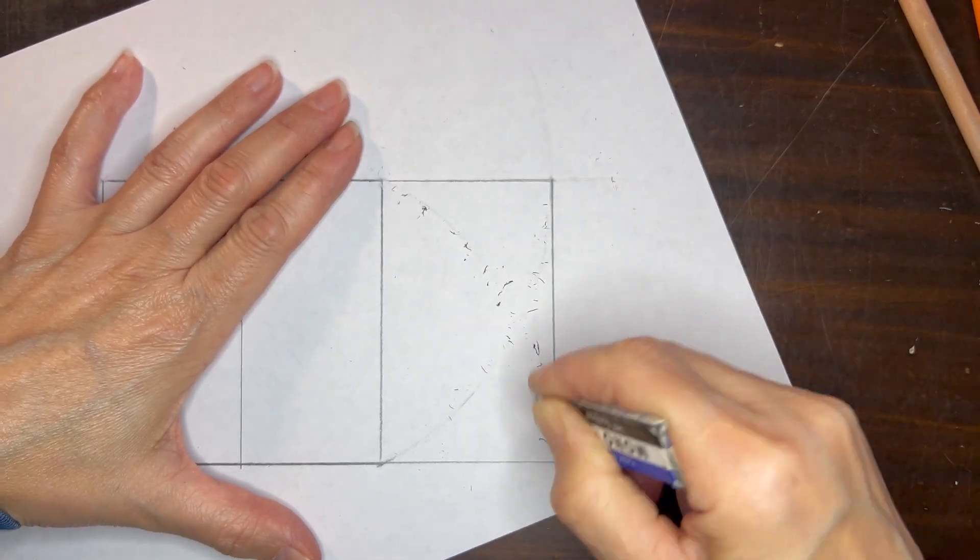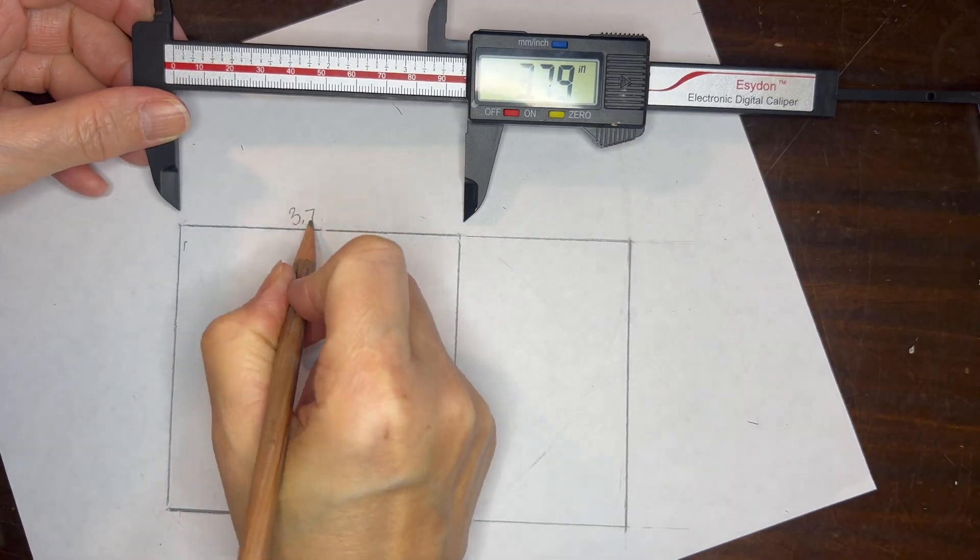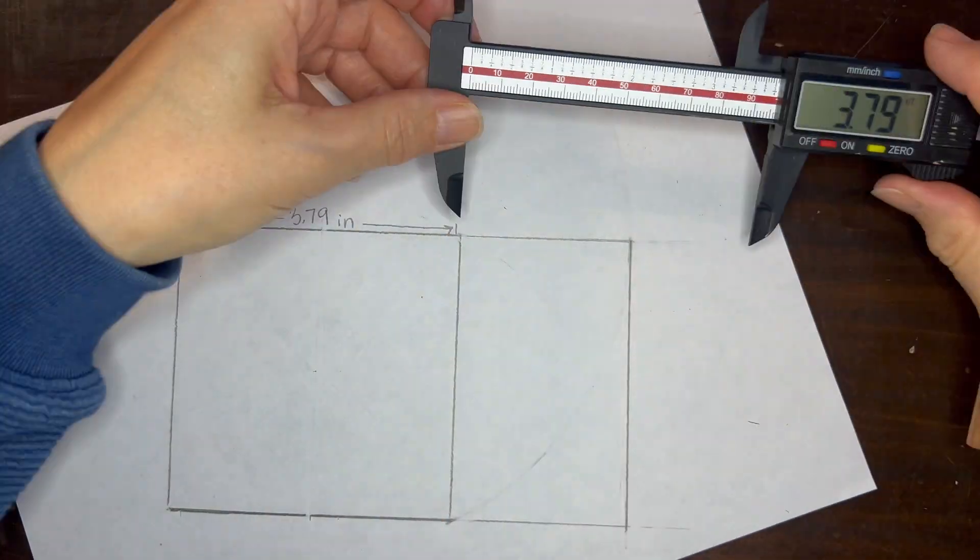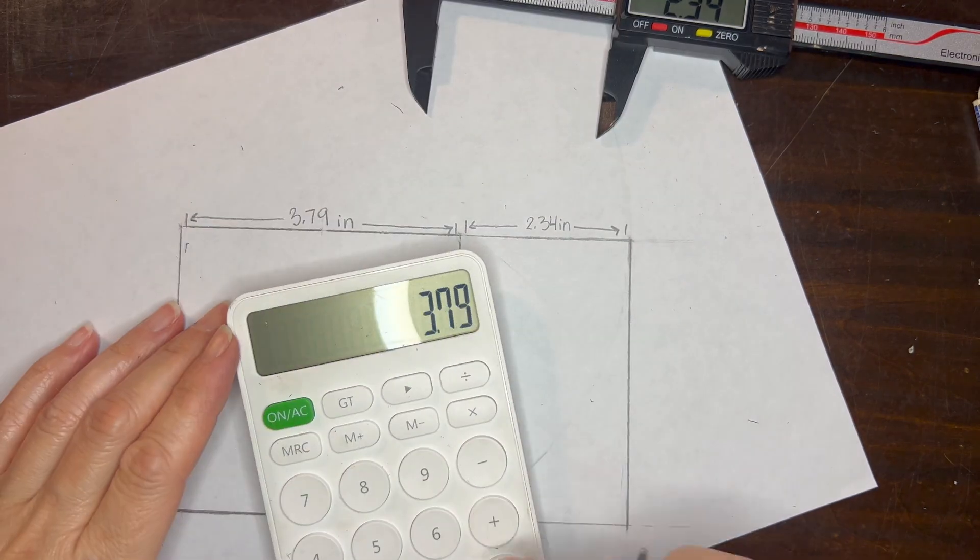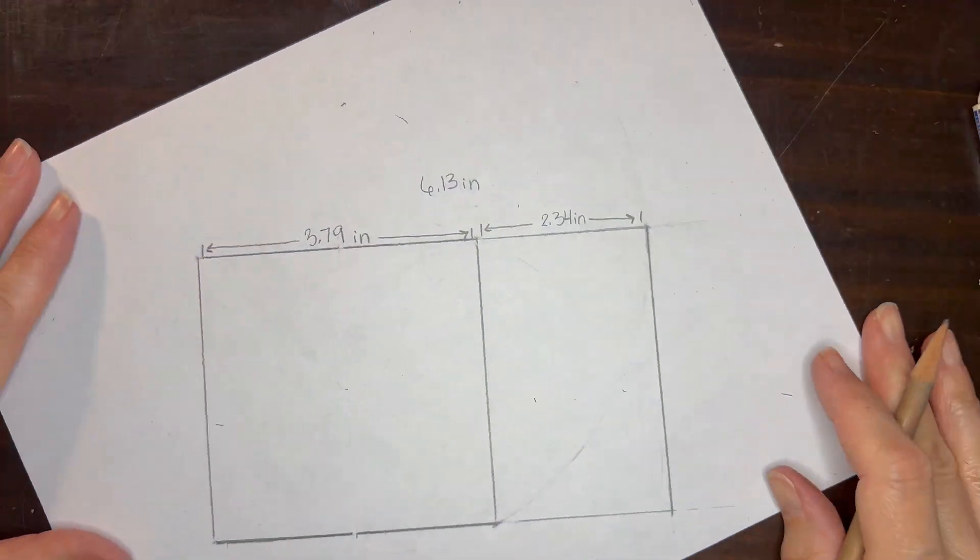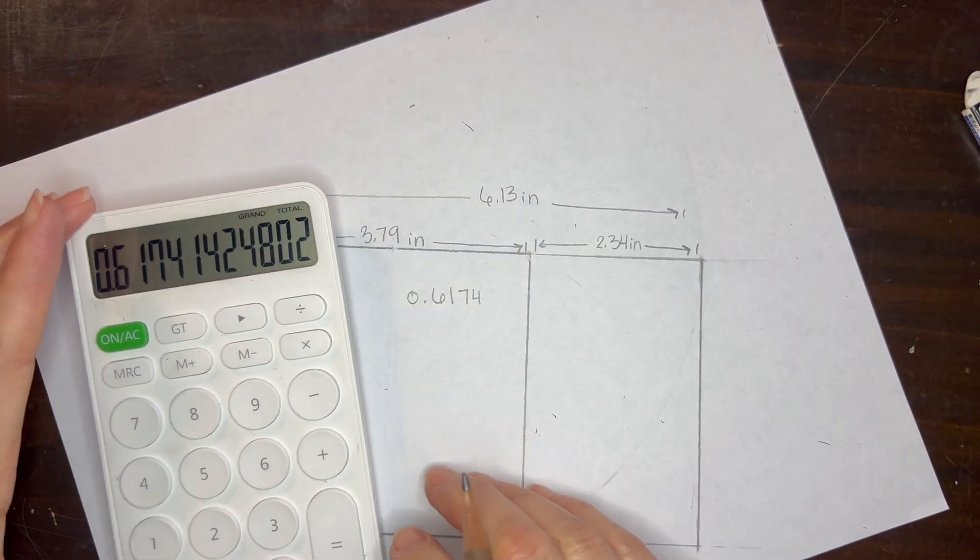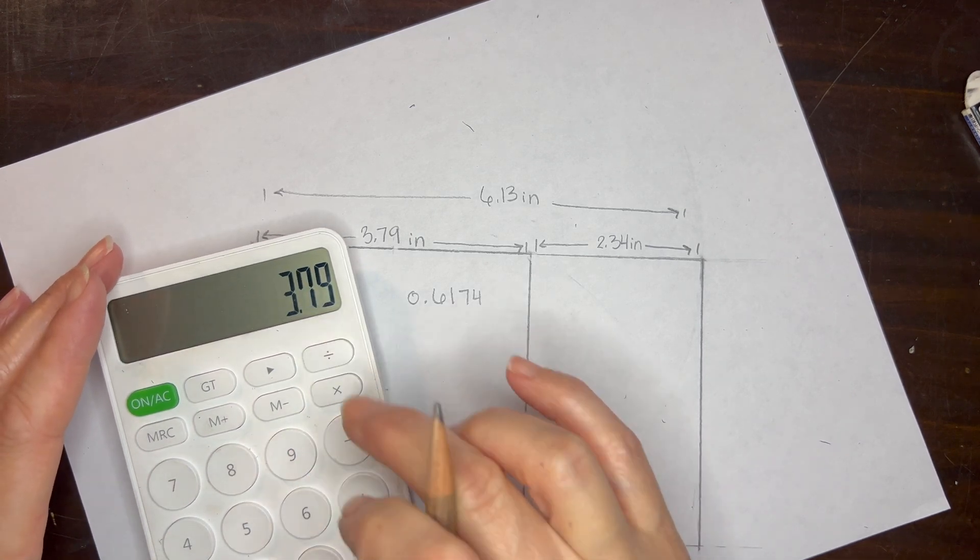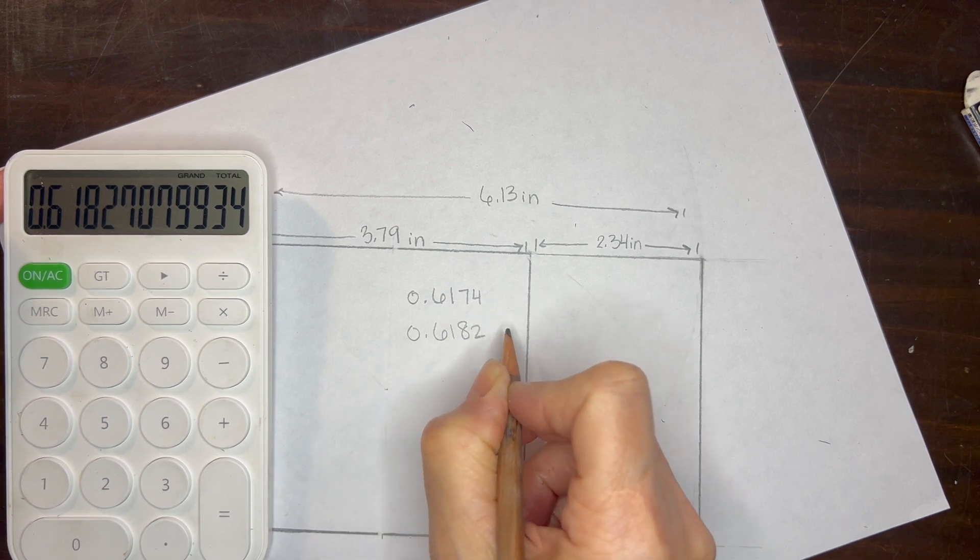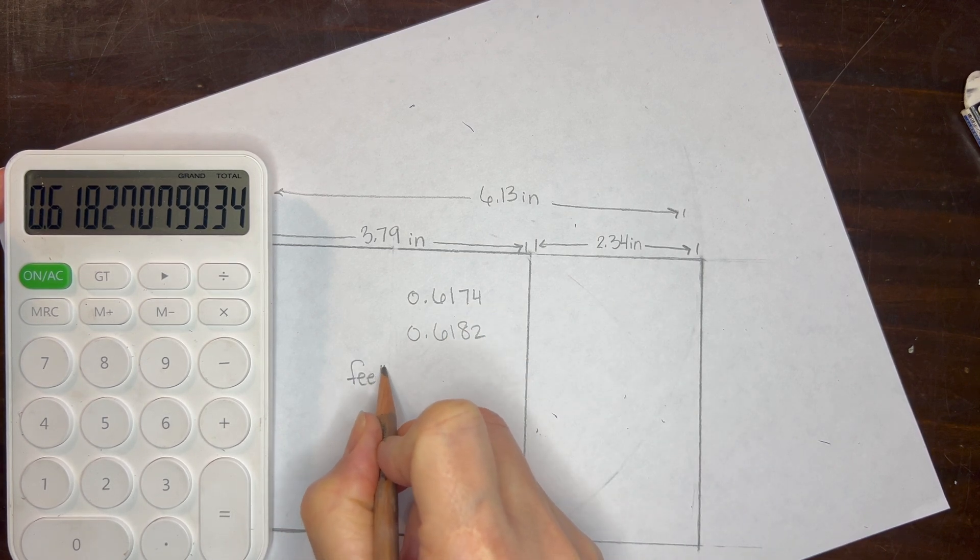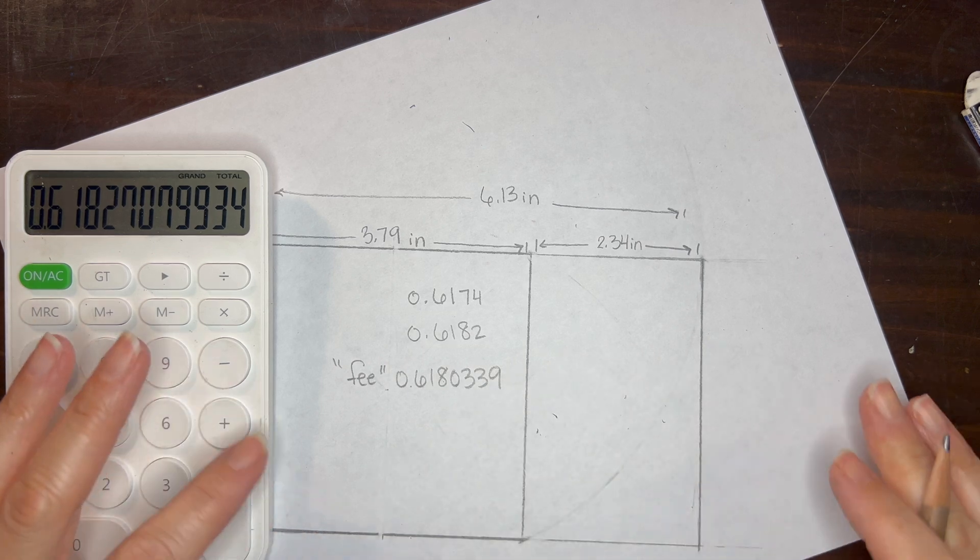Once again we're going to erase all those extra arcs and lines so that we can measure our lesser portion and our larger portion. I'm going to write those parts down so that we can find our golden ratio and see if we got any closer to the golden ratio. We measured our smaller to the larger and we got 0.617 so we're doing really well. Now we're going to measure our larger portion to the whole and we have 0.618 which is even better and as a reminder phi is 0.6180339 and of course those digits go on to infinity.